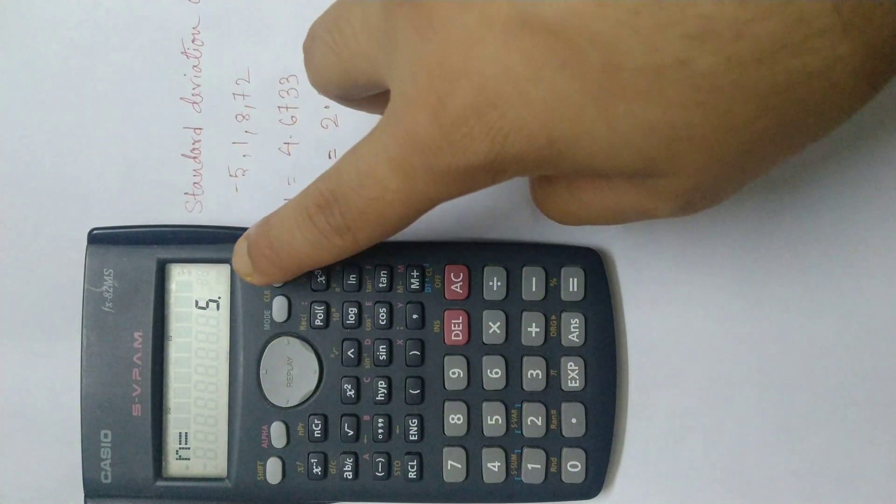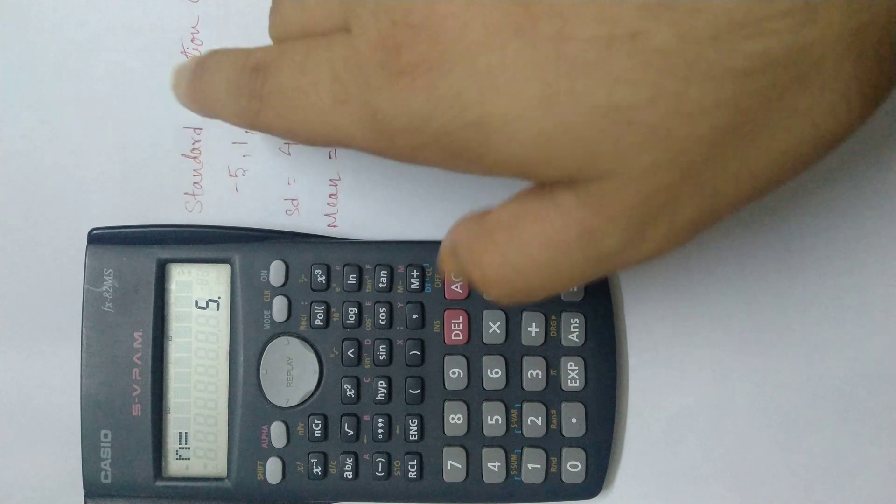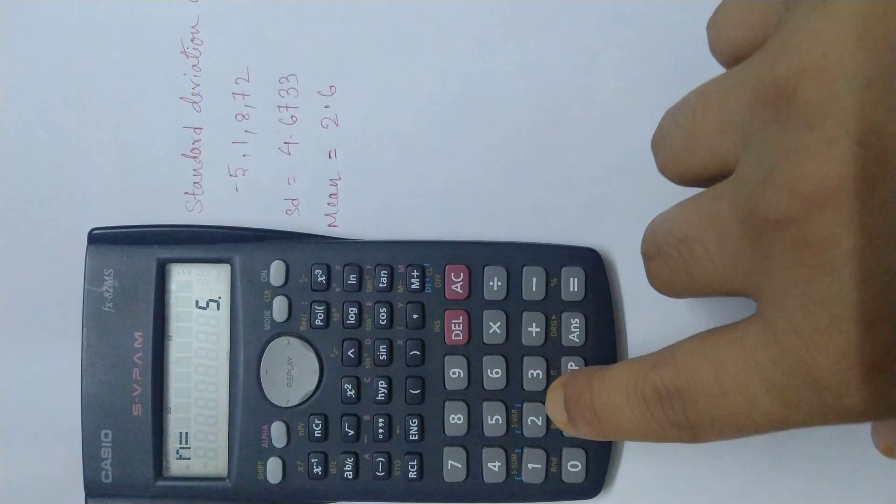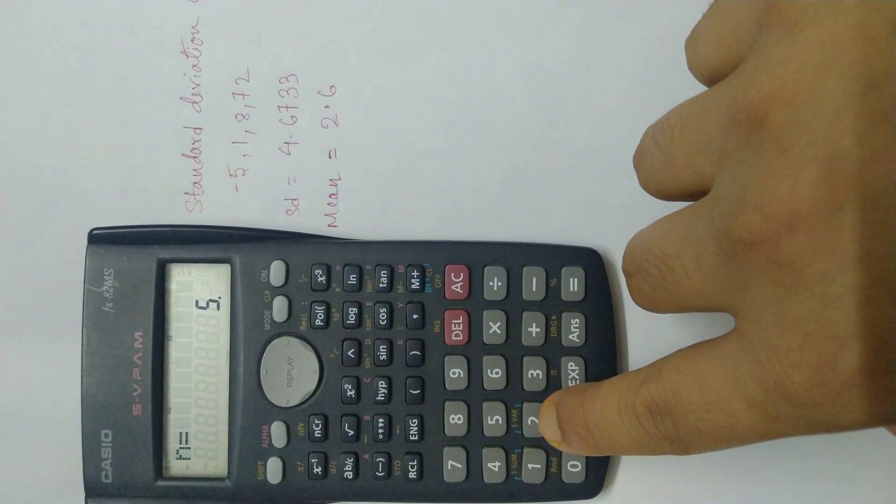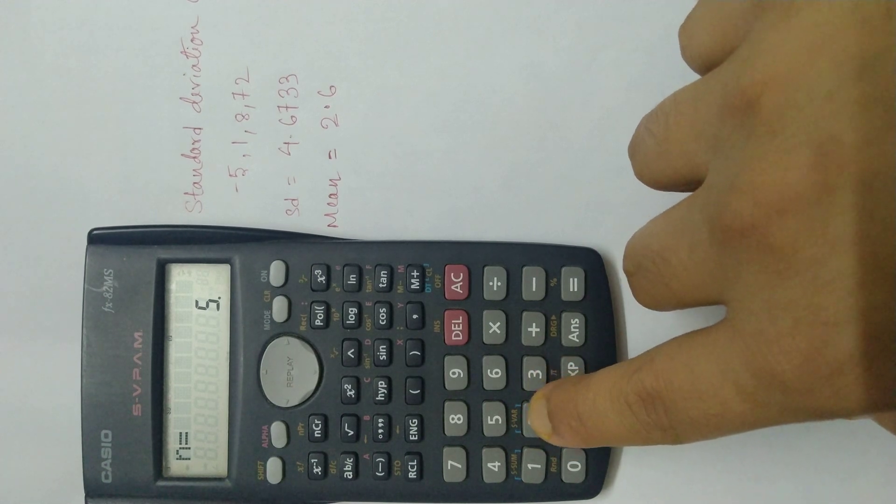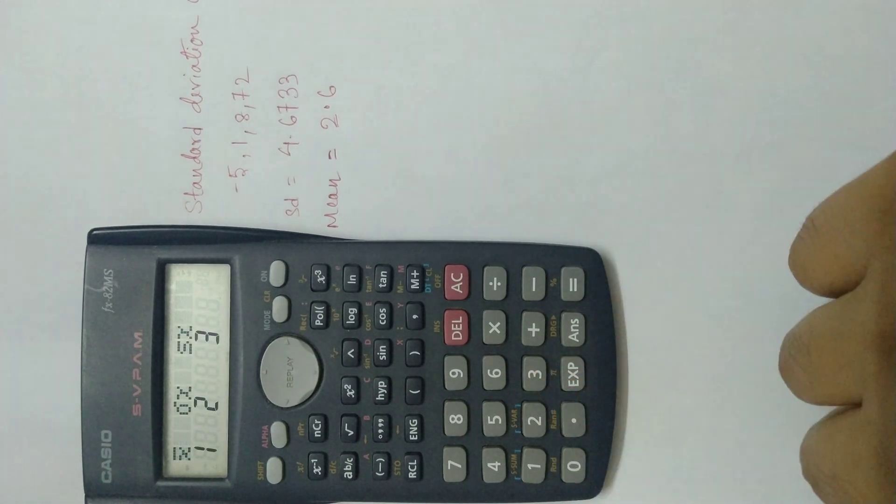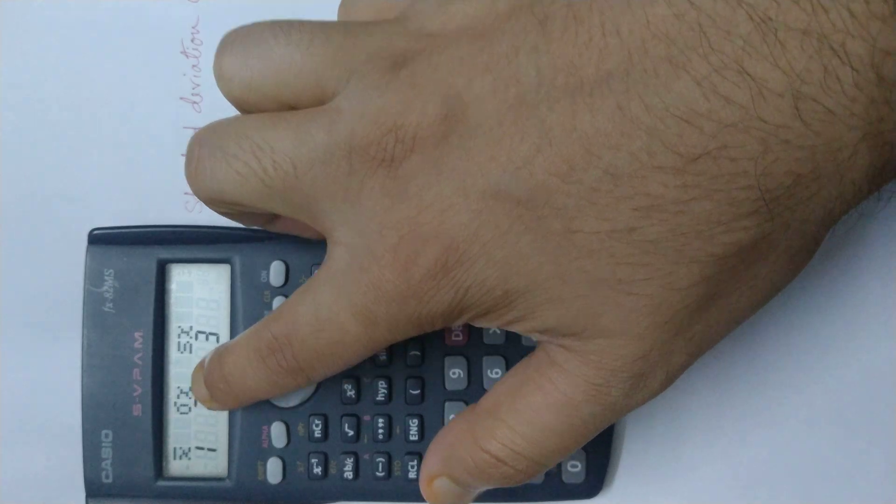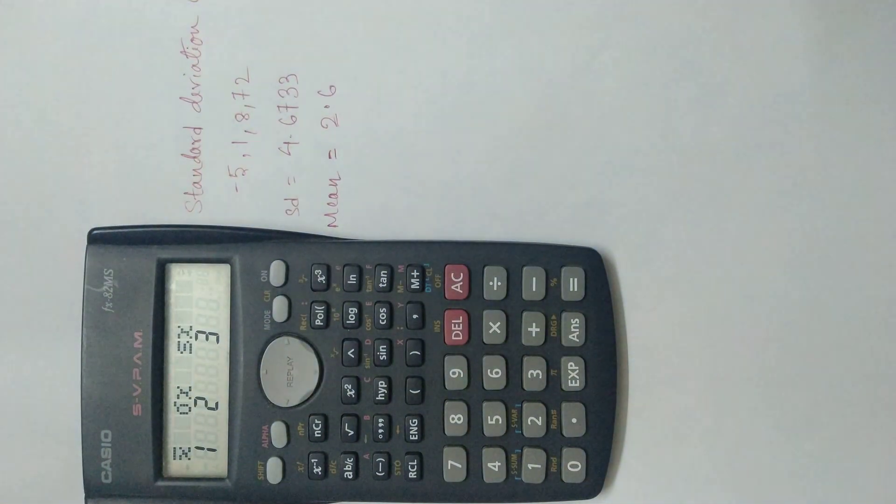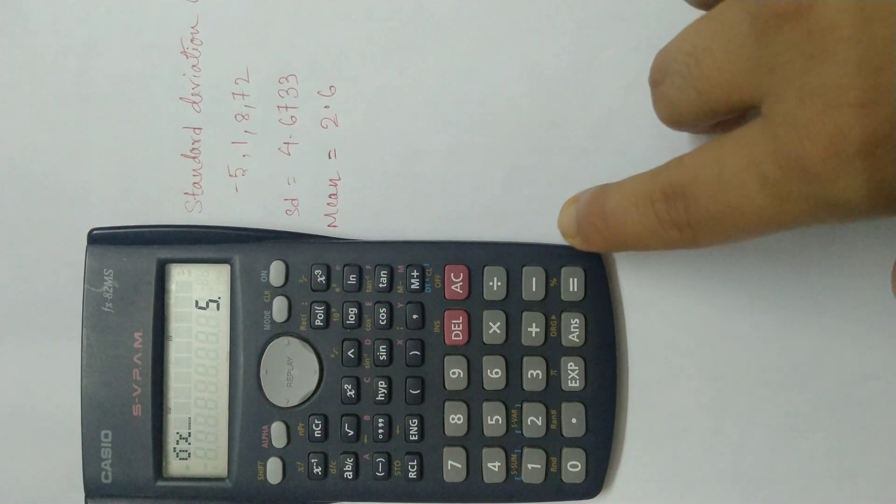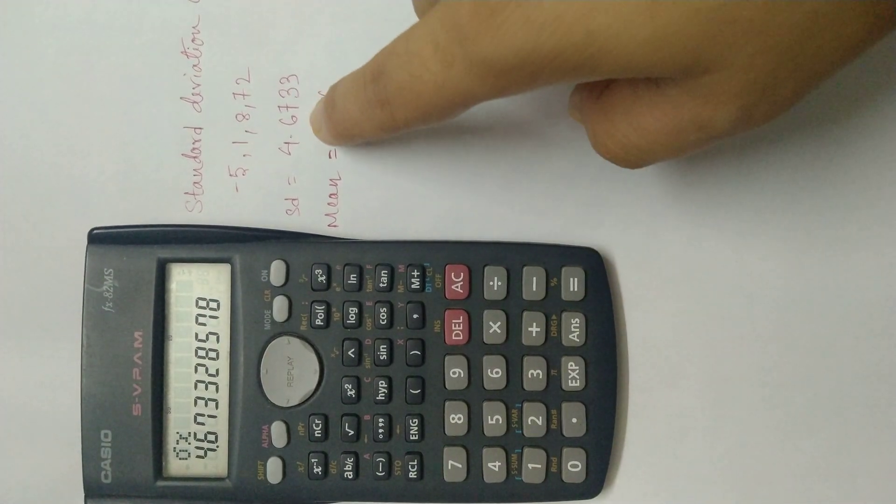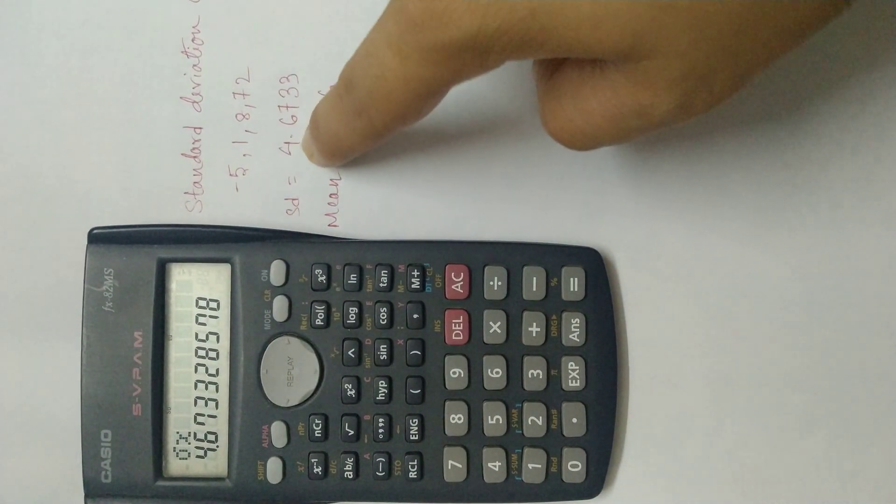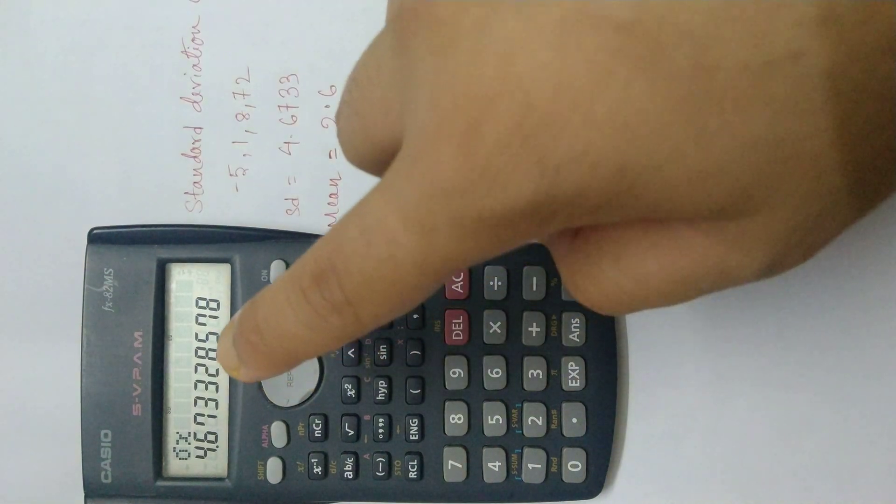Now to find the standard deviation we press shift. Then here you can find it is written SVAR over 2. So we press 2. And now this sigma of x, this is actually standard deviation of x. So we press 2, then equals. Here you can see I have already computed the values. It is 4.6733 and it has already matched here.